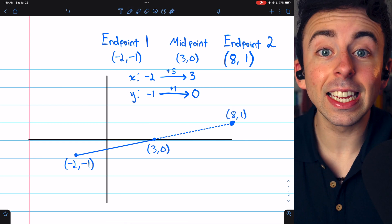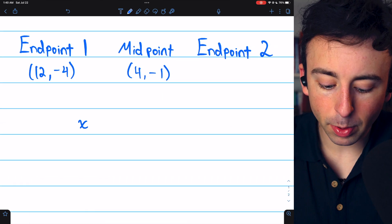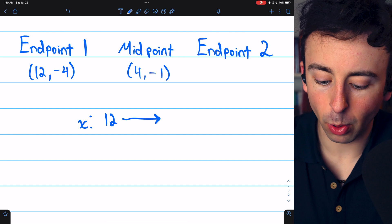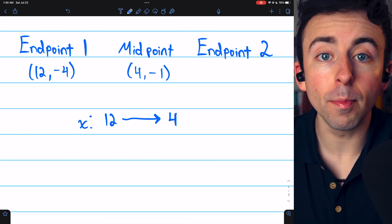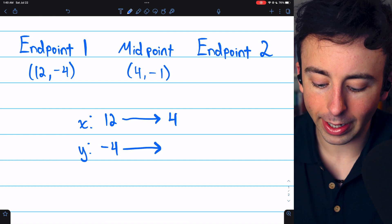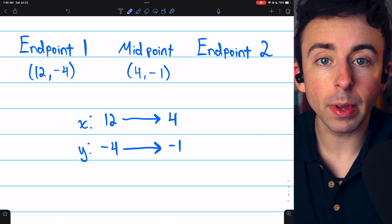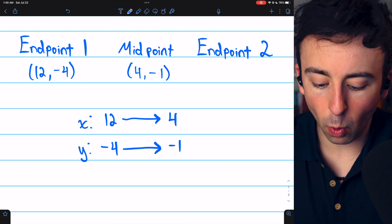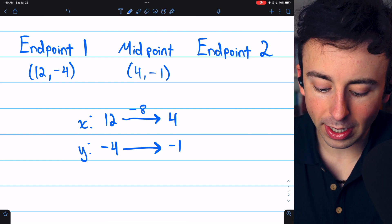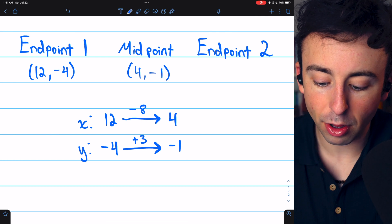All right, let's try this again in a second example. In this example, the x-coordinate changes from 12 at the given endpoint to 4 at the midpoint. The y-coordinate changes from -4 at the given endpoint to -1 at the midpoint. So the x-coordinate changed by -8, and the y-coordinate changed by +3.